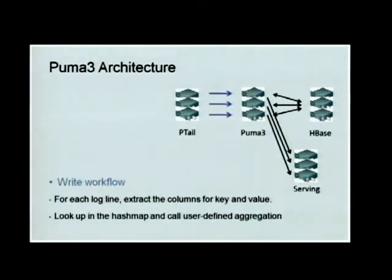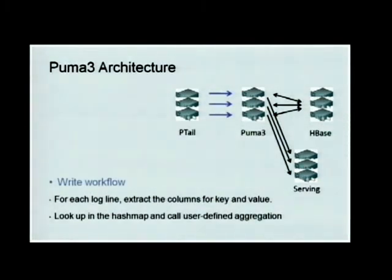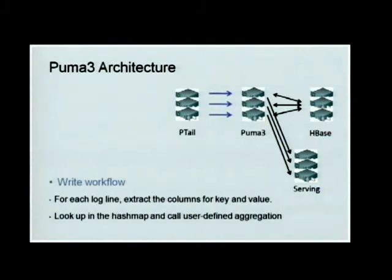The write workflow: from PTail to Puma3, for each log line we extract the columns for the keys and values we want to aggregate. We look up in the hash map by the key, and call the user-defined aggregation function by passing the value. That's very simple.